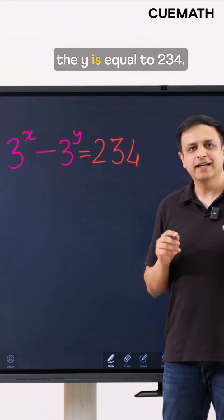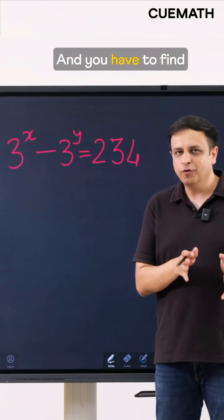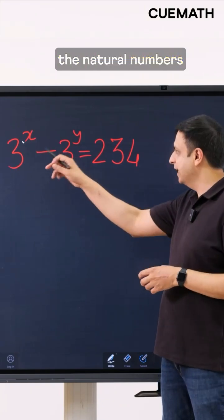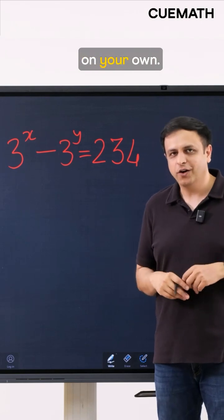3 to the x minus 3 to the y is equal to 234 and you have to find the values of the natural numbers x and y that satisfy this equation. Try solving it on your own.